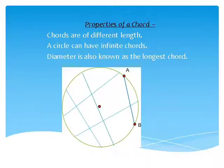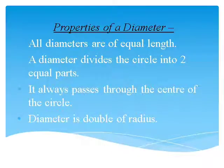As we move on, now let us learn about the properties of a diameter. All diameters are of equal length. A diameter divides the circle into two equal parts. It always passes through the center of the circle. And diameter is double of radius.